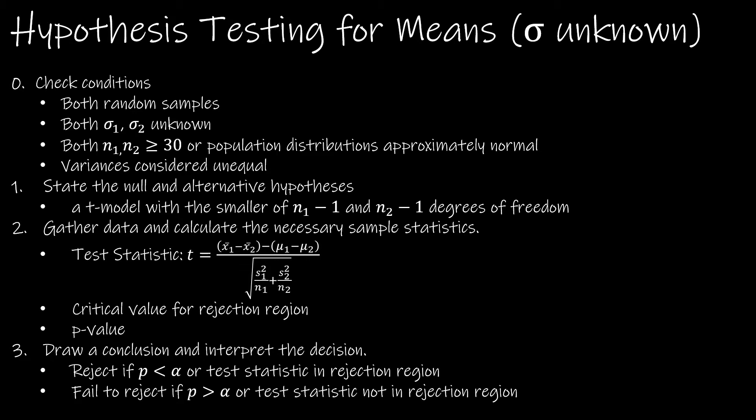So the null and alternative hypotheses, same as we have before. A key thing here that you need to understand and note is that this T model is going to have the smaller of n1 minus 1 or n2 minus 1 degrees of freedom. And again, we're going to let Excel do that for us, but you can certainly do that yourself if you'd like.